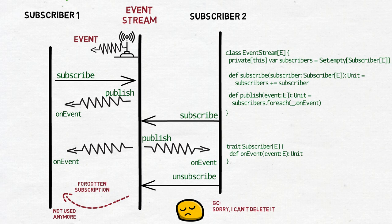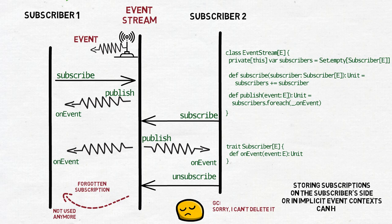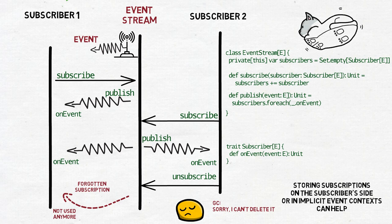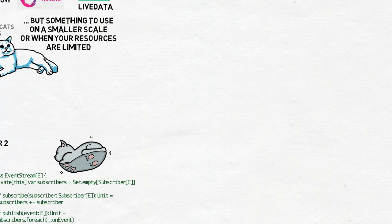We can solve this problem with some sort of automatic unsubscription. We can, for example, model subscriptions as case classes holding references to both the subscriber and the event stream, and use it to unsubscribe in some sort of on-stop methods. Or we can use event contexts — implicit objects which oversee subscriptions. You can look into the Wire Signals documentation for more details.